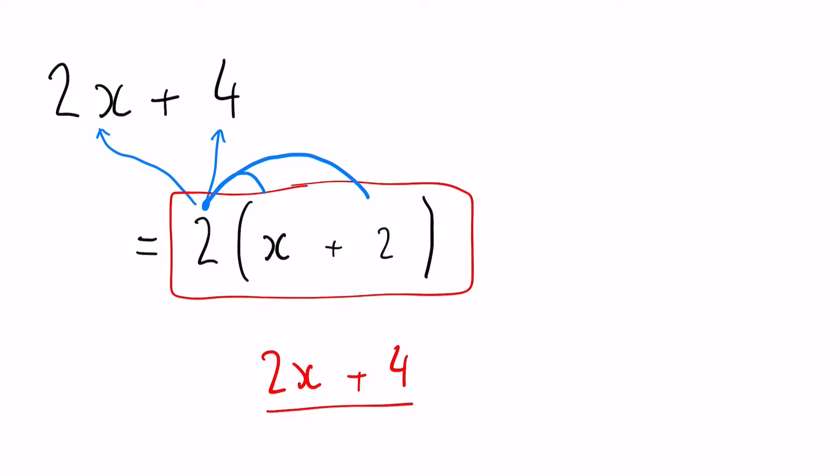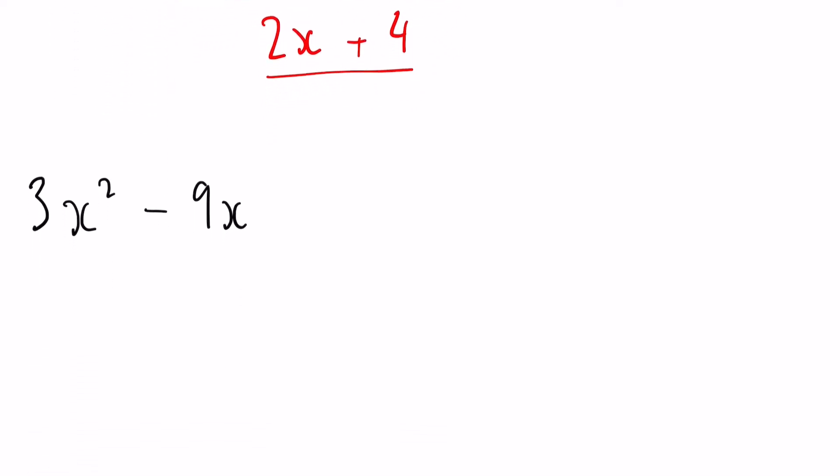Let's have a look at question number 2 now. 3x squared minus 9x. Exactly the same principles apply. We look at the numbers and think, is there any number that goes into both of these? And we can immediately see there is a 3.